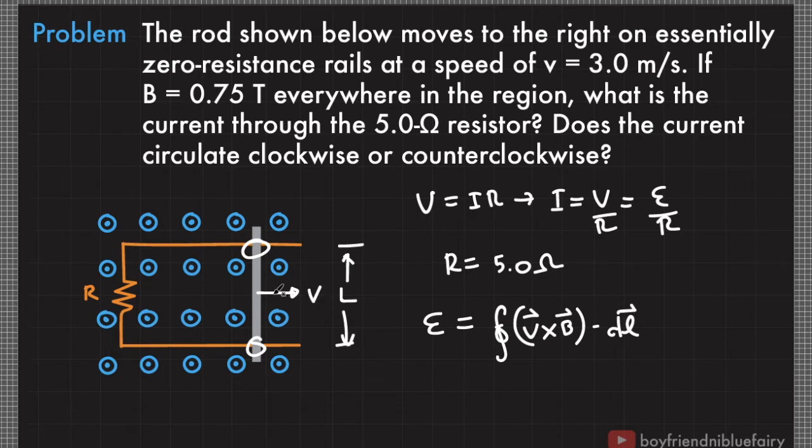Writing down our working equation for the motional EMF. Based on the figure, the velocity and the magnetic field vectors are perpendicular to each other. So essentially, I can convert this into its magnitude. E equals integral of VB sine theta. I emphasized that they are perpendicular to each other, so essentially this is sine 90 degrees.